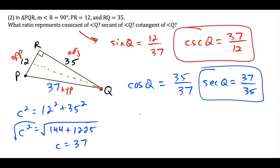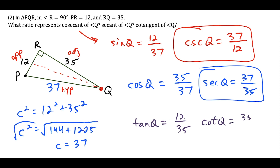Last, we're looking at cotangent, which is the reciprocal of tangent. Tangent of angle Q is the ratio of the side opposite the angle over the side adjacent, which gives us 12 over 35. So cotangent of angle Q — the reciprocal of tangent — we flip 12 over 35 to get 35 over 12. This is our final solution to the second question.